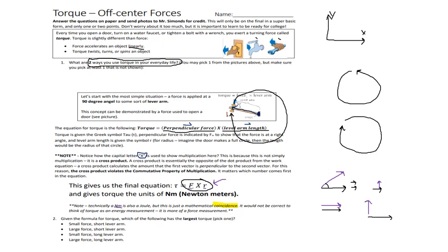Torque is largest when both things involved are largest. A bigger force gives you a bigger torque — if you push harder on a door, the door opens faster. Also, the longer the lever arm. That's why we have wrenches: trying to spin a bolt with your fingers is very hard, but adding the wrench increases the lever arm length and therefore we can apply more torque with the same force.